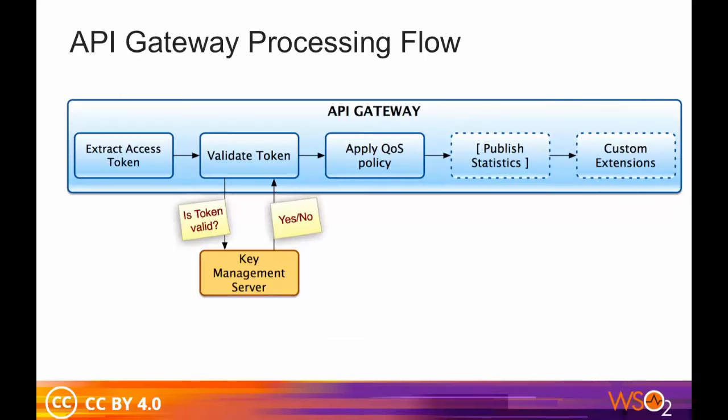When a request comes to the API Gateway, it first extracts the access token and validates it against the key management server, and then applies the quality of service policy. Next, custom extensions that are defined are applied. If Data Analytics Server is configured, statistics will be published.